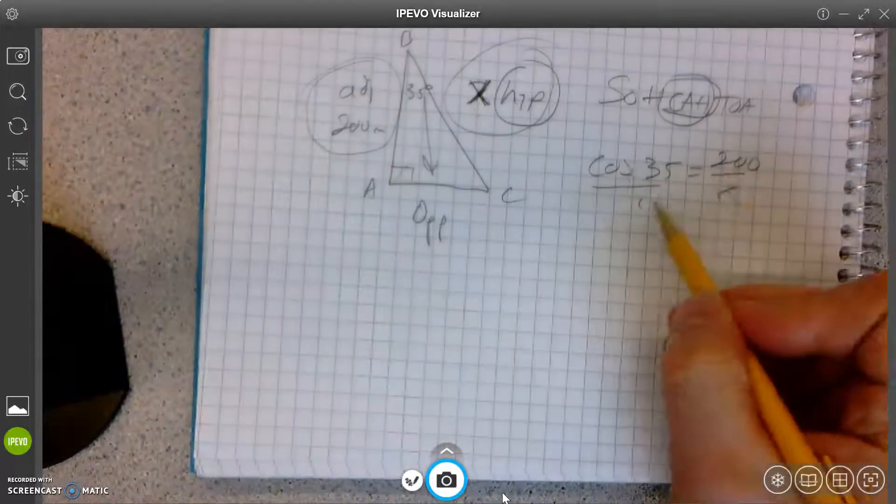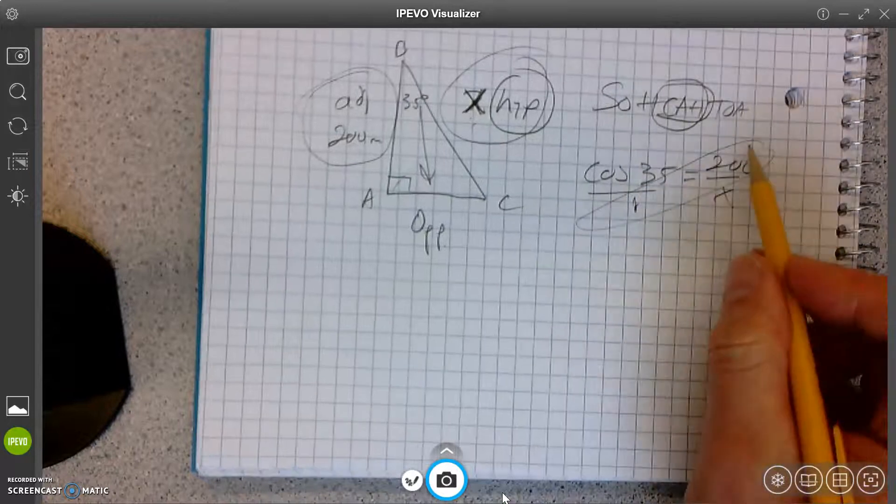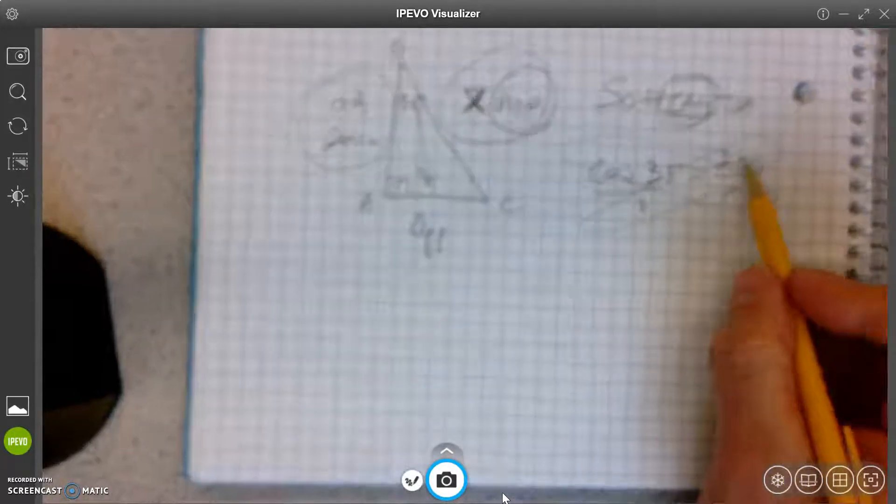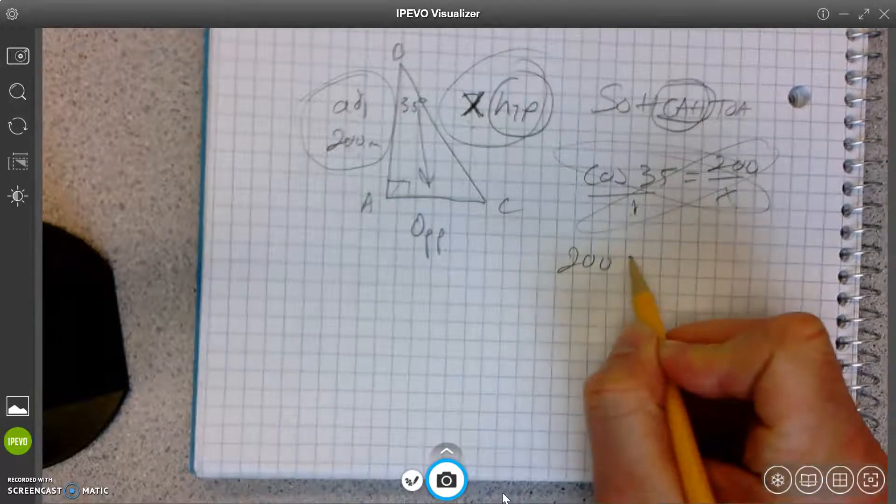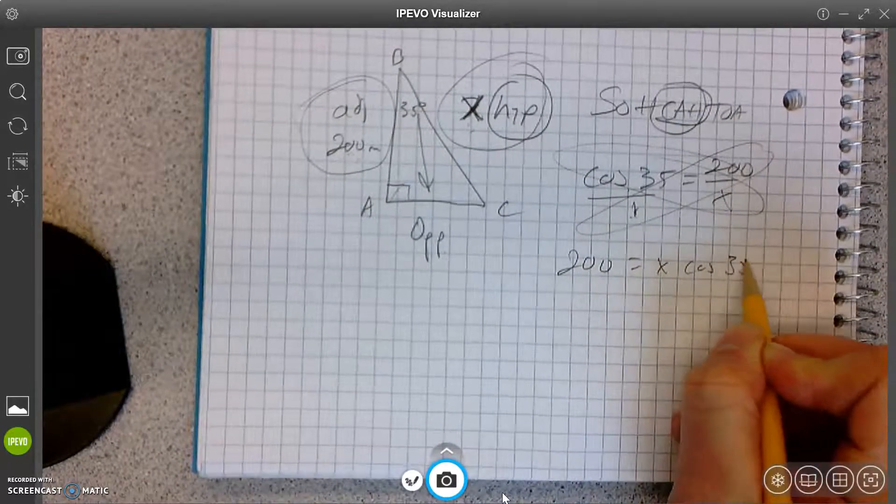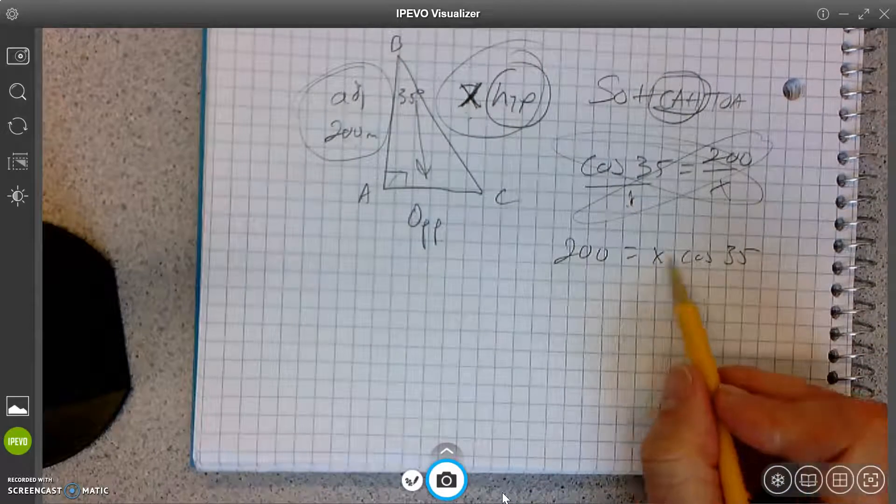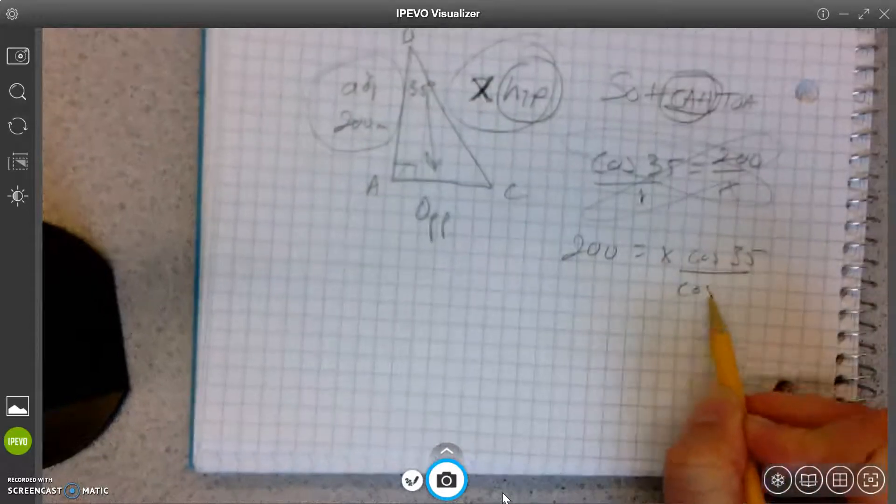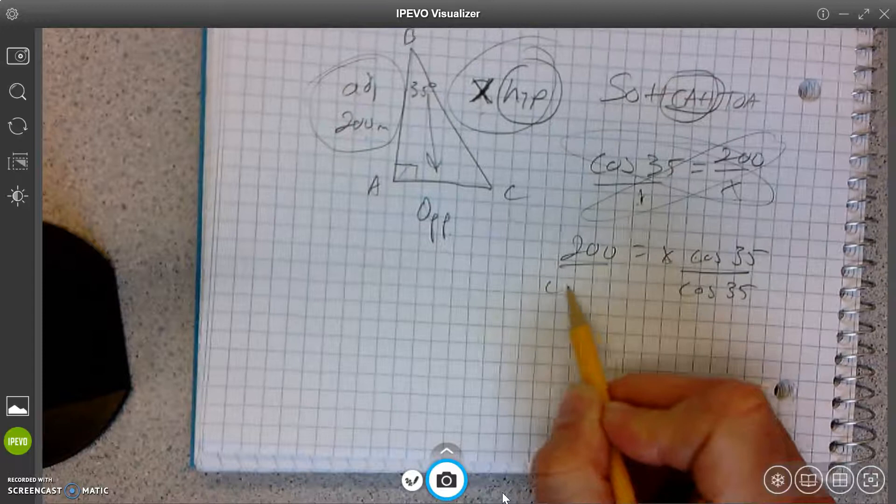Okay. So what do I do now? Solve for X. Cross multiply. 200 times 1 is 200. X times cosine of 35. There you go. Multiplying by cosine of 35. This is a number. So I have to divide by cosine of 35.